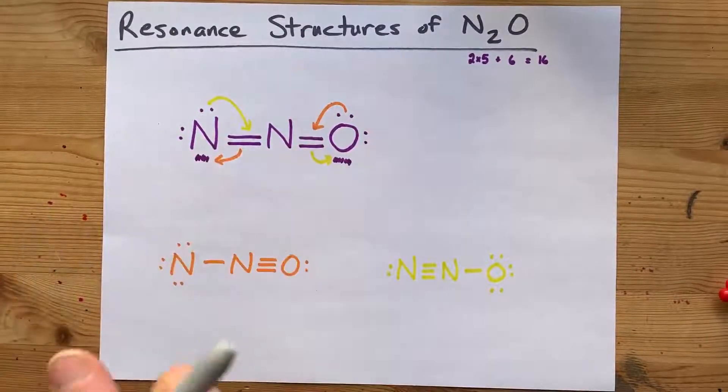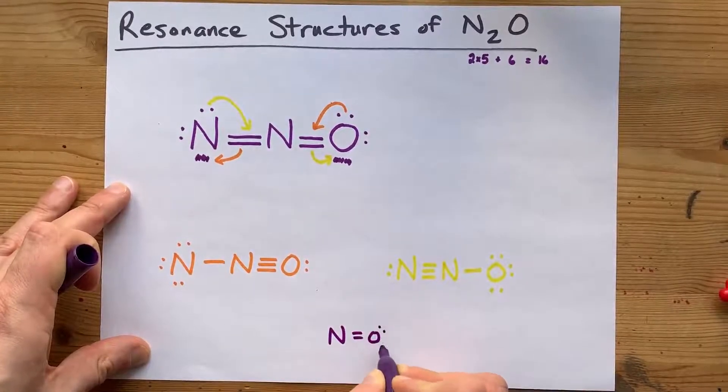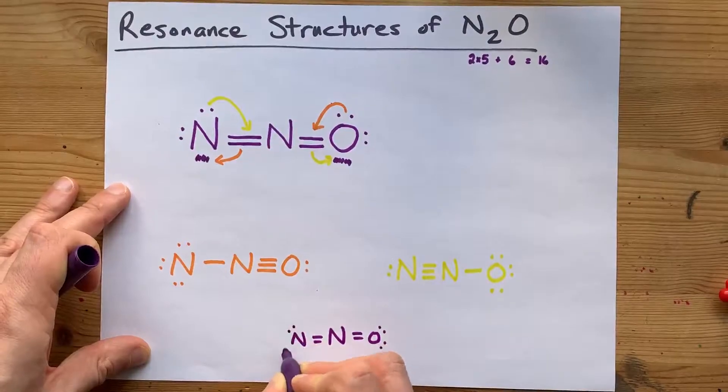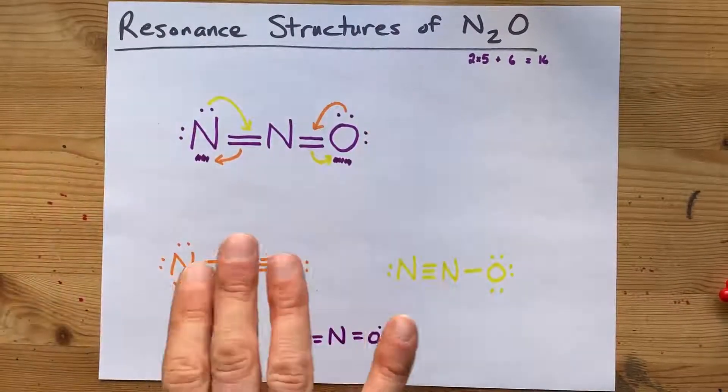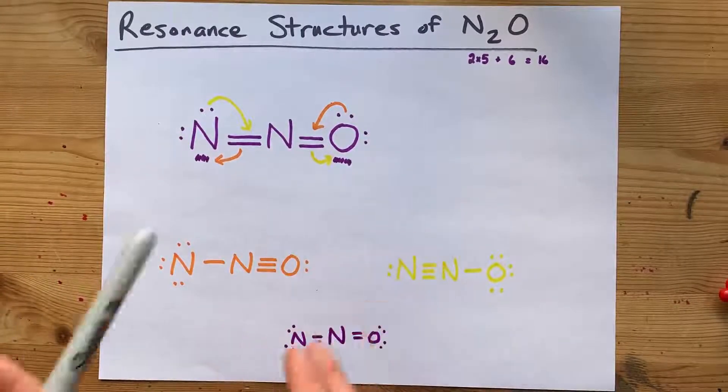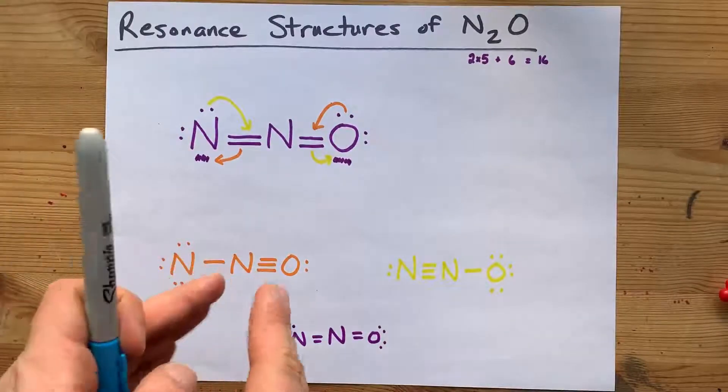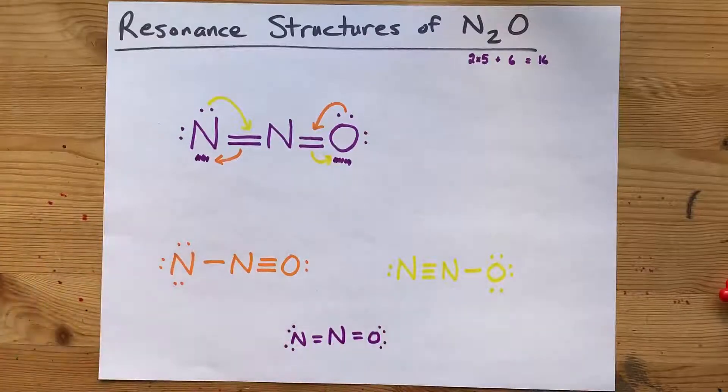I'm going to redraw this one here, because I've kind of gummed it up with what I was showing you. Double to O, double to N. There we go. Three valid resonance structures, three valid Lewis structures, I should say. And they're all technically resonance structures of each other, because you still have N, N, O, but the distribution of the electrons is different.